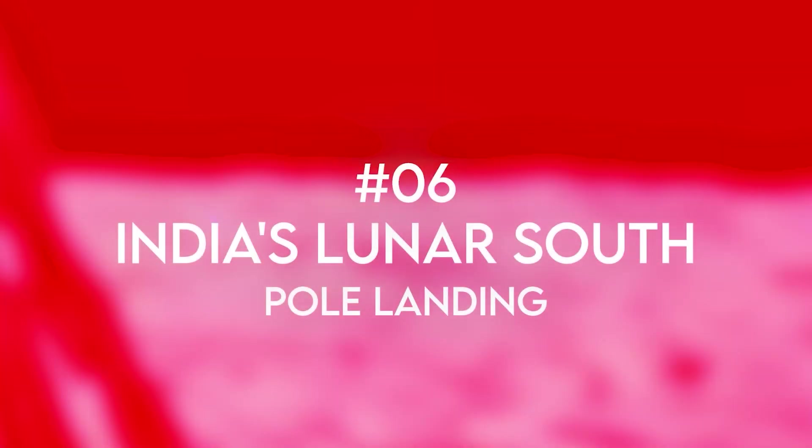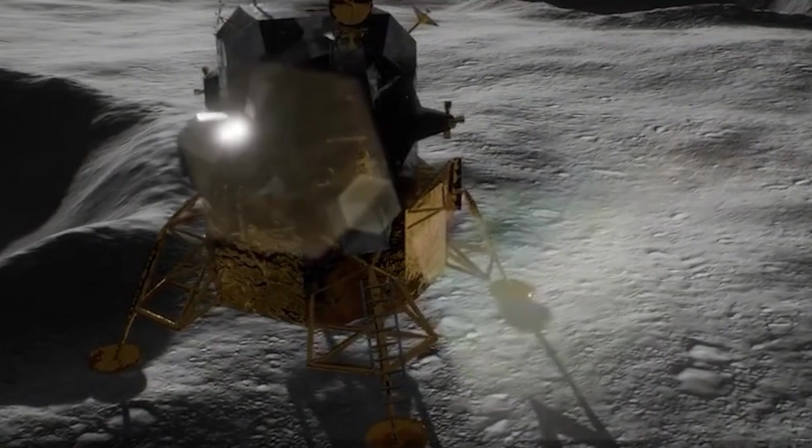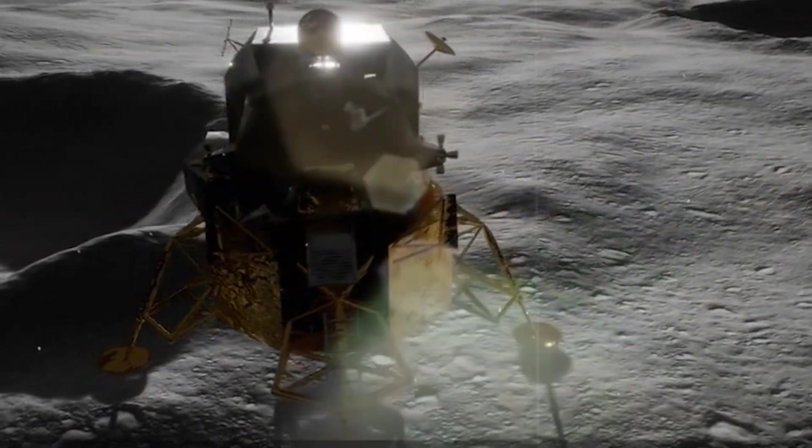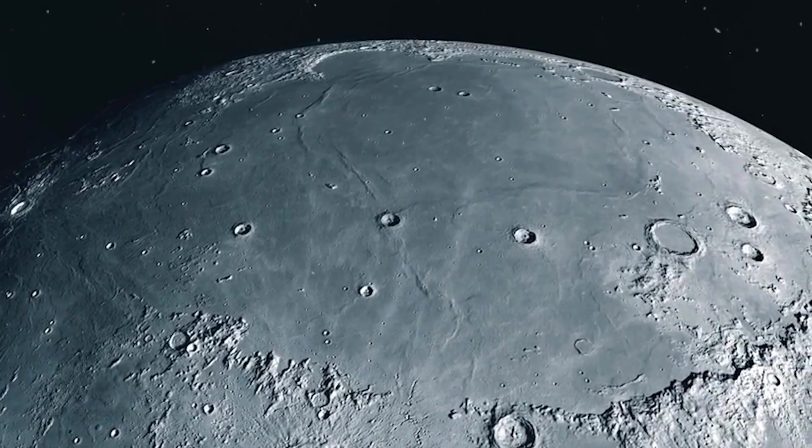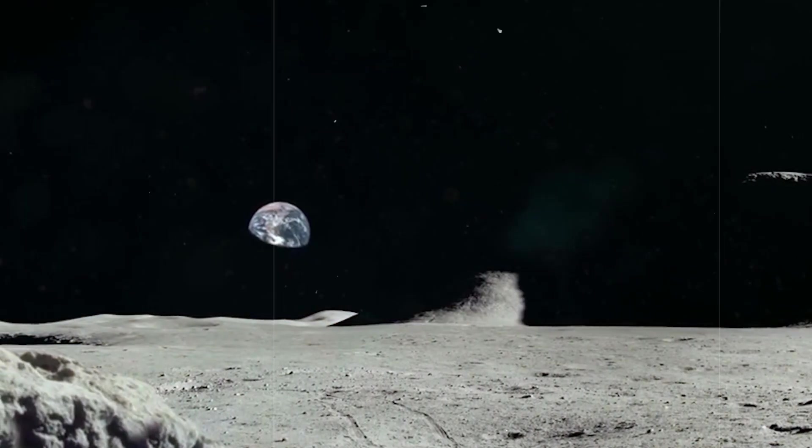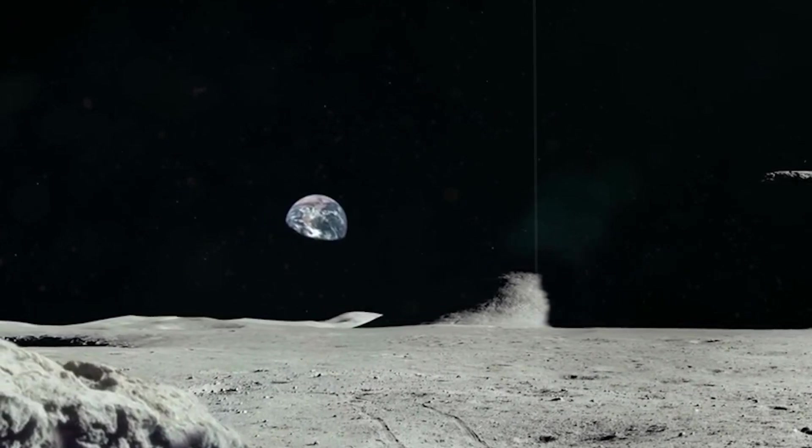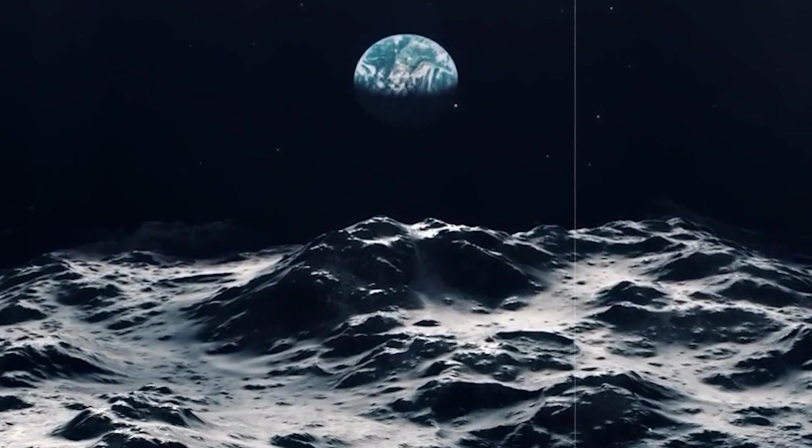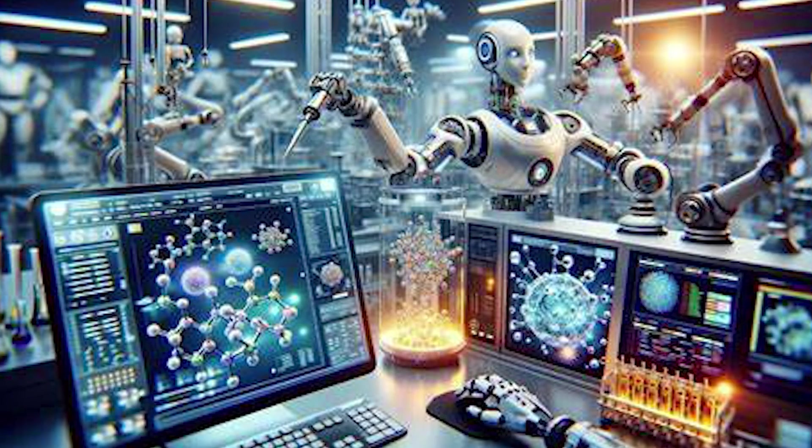Number 6. India's lunar south pole landing. India has created history on the moon. India became the first country to land close to the moon's enigmatic south pole, an area long obscured by mystery and scientific curiosity with its Chandrayaan-3 mission. This historic accomplishment not only demonstrates India's growing space exploration capabilities, but also paved the way for the study of frozen water and unexplored resources that may one day aid human missions. Still in space? Good, because AI is launching materials science into a new orbit.